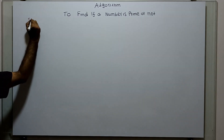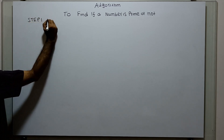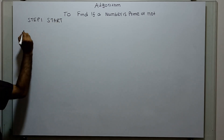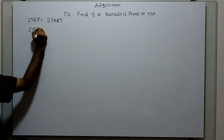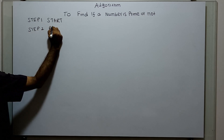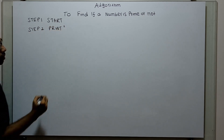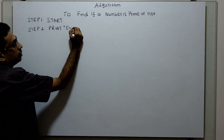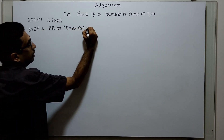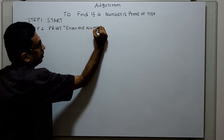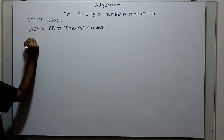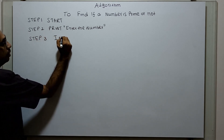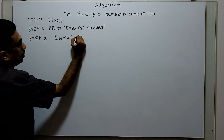Step 1 is the logical start of the algorithm. Step 2, by using a print statement, I am asking the user to enter the number. Step 3, I am obtaining the input n.